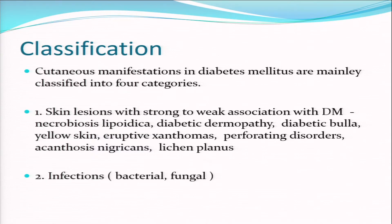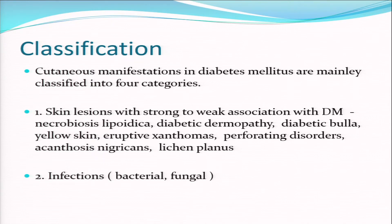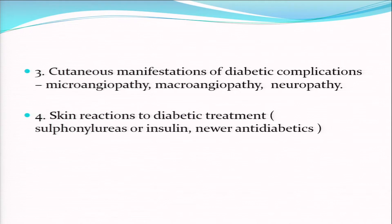We classify these manifestations in diabetes mainly into four categories: skin lesions with strong or weak association with diabetes mellitus, which include necrobiosis lipoidica, diabetic dermopathy, diabetic bulla, yellow skin, eruptive xanthomas, perforating disorders, acanthosis nigricans - which is an evolving topic as an endocrinopathy seen in metabolic syndrome and a good marker for insulin resistance, associated with diabetes and PCOS - and oral lichen planus.